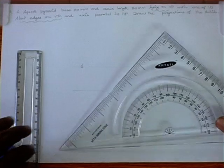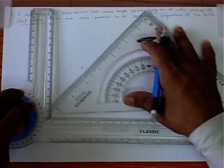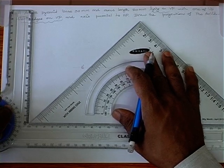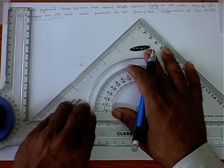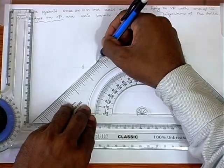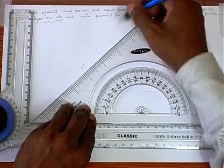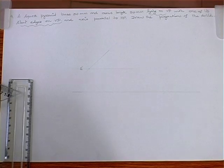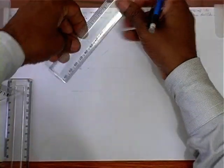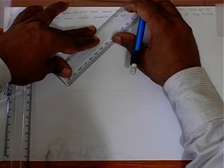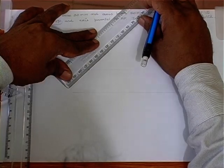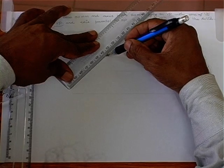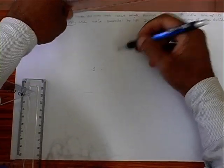Draw a 40-degree line through A dash to get the side of the square. We draw the 40-degree line and mark 30mm on it — 10, 20, 30 — so we make 30mm here.